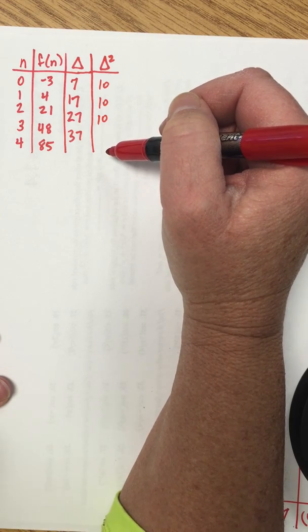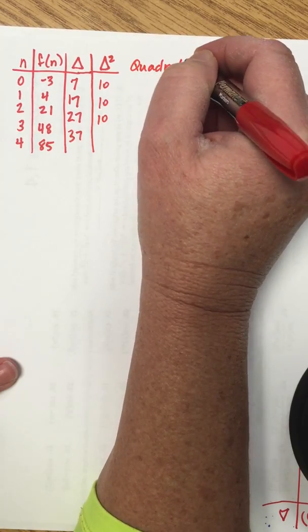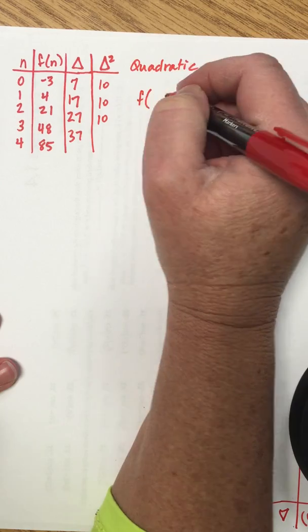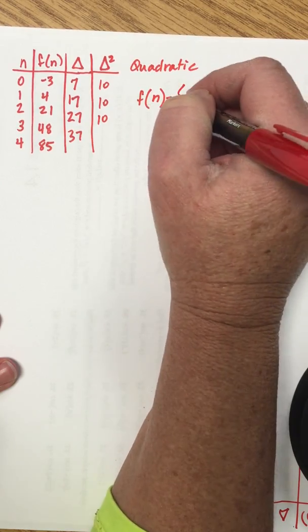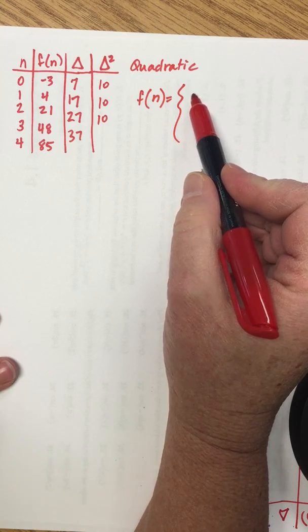So now we see that we have constant second differences which means that we have a quadratic table of data. Now the recursive form has two parts. The first part is really easy because it's just what is the first output at the first input.